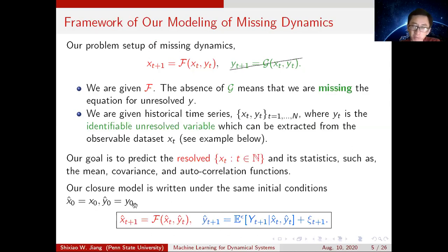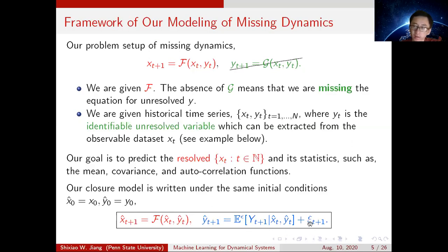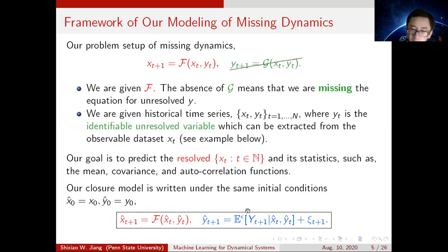The partial dynamics F is known, so we can write down the dynamics for X(T). For Y(T), since G is missing, we need to replace this G with the conditional expectation Epsilon, plus a residual Gaussian noise. Basically our task here is just to train this conditional expectation Epsilon based on the historical datasets X(T) and Y(T).